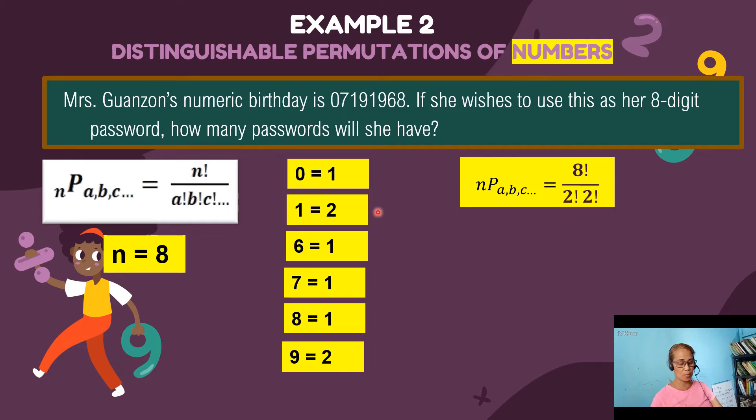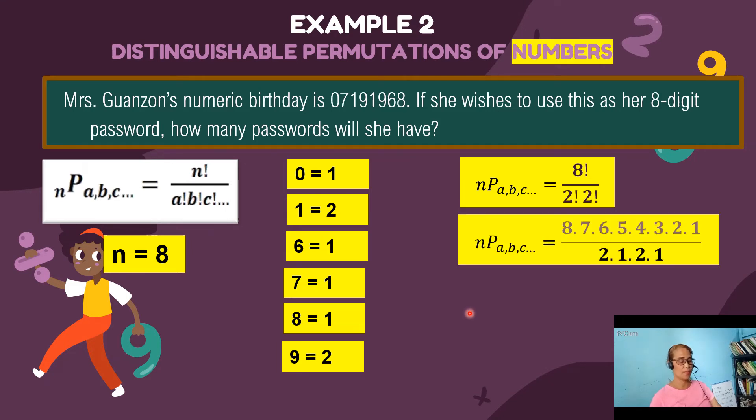So moving on. Eight factorial will be expanded this way and two factorial also this way. Now we can cancel